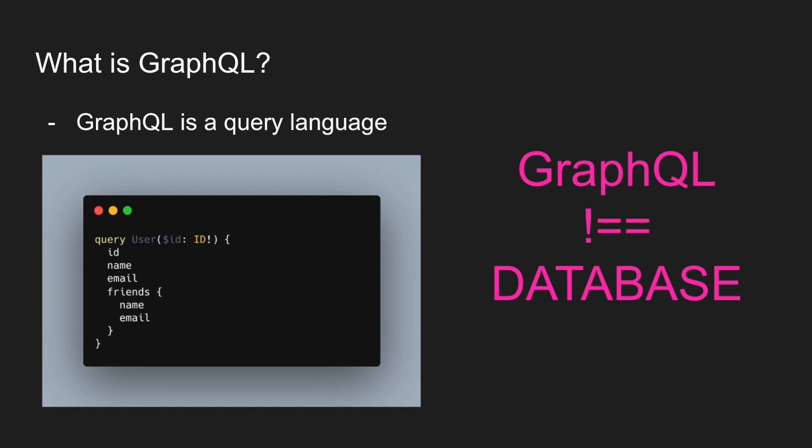So GraphQL exists technically as a layer in between your front end and your back end. The client, which is the front end, will use this query language to request data from the API, and GraphQL will decide what to return based on that. Differently from SQL or other database languages, GraphQL exists in between the front end and the back end, whereas those database query languages exist in between the back end and the database. I really want to make this distinction because I hate seeing someone asking which database do you use — do you use GraphQL? I used to see the letters QL at the end and think it was some type of SQL database, but it isn't.